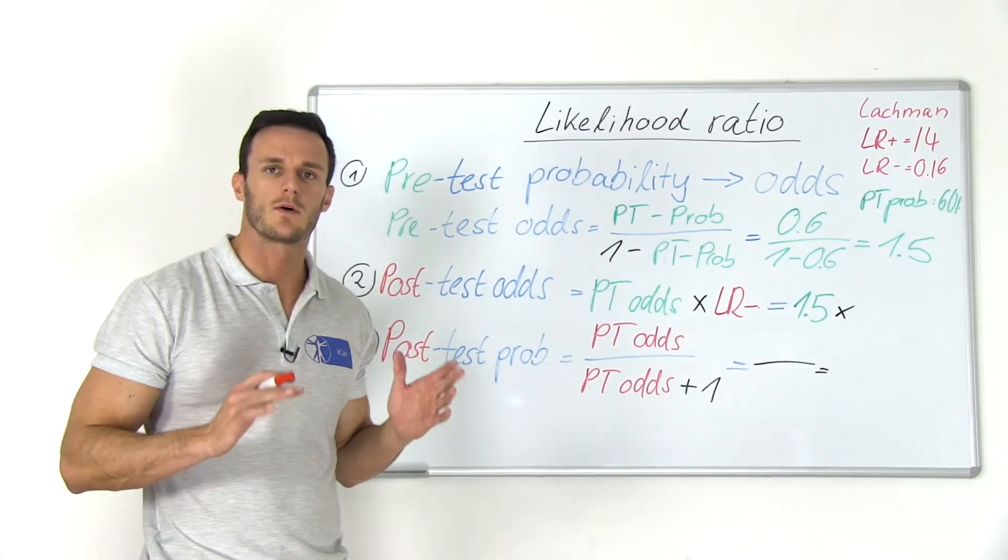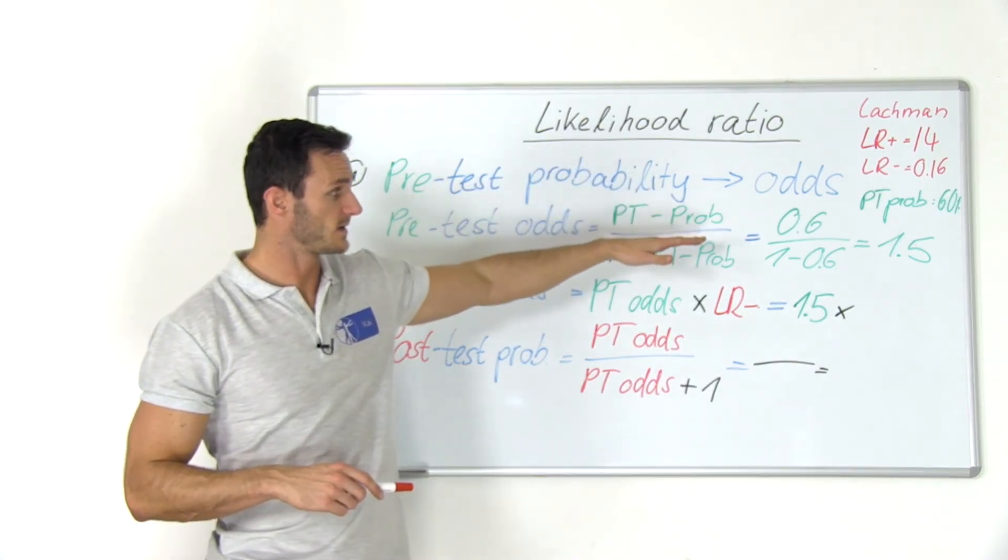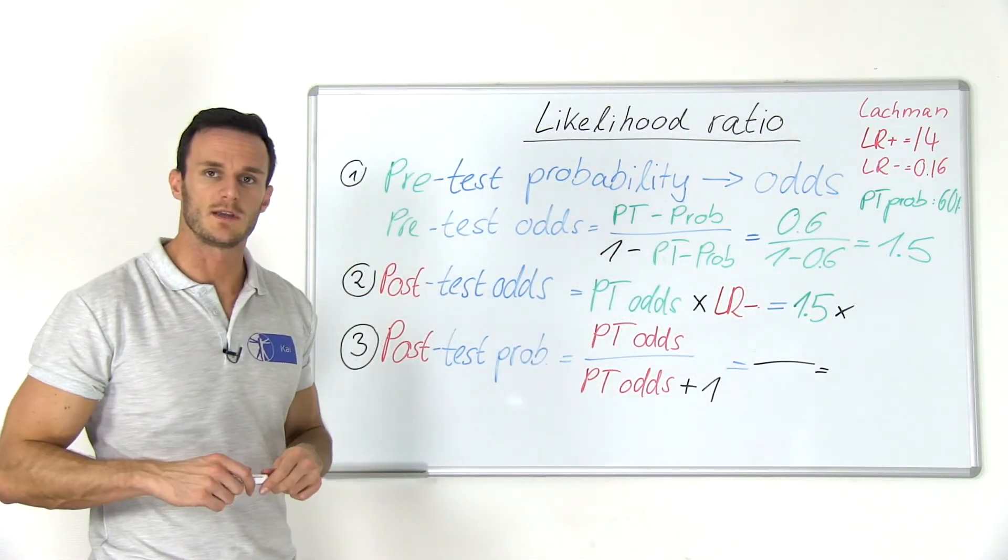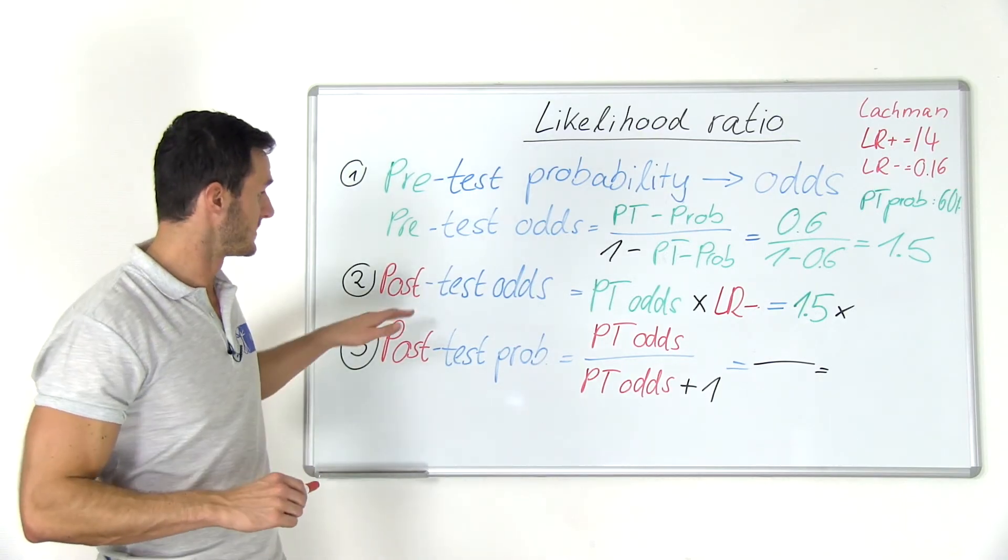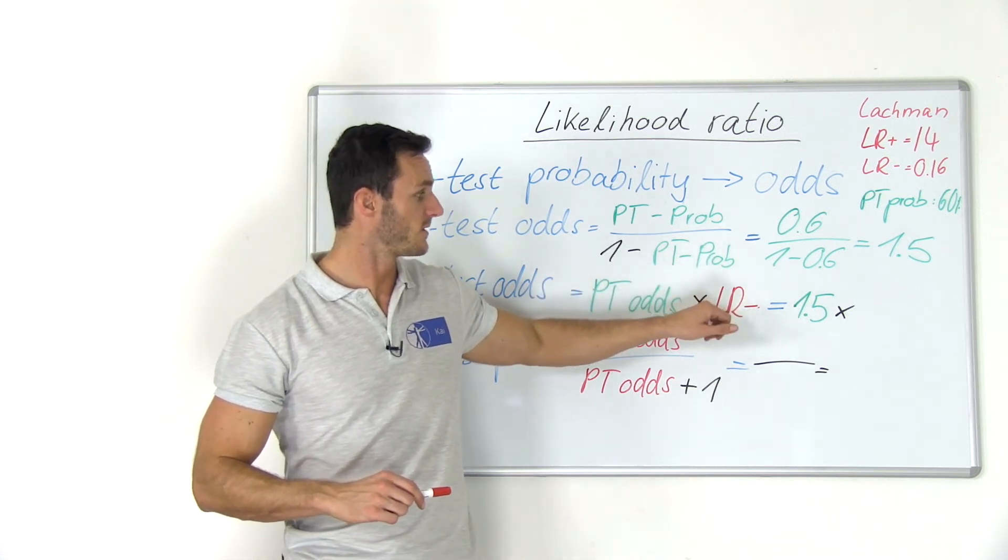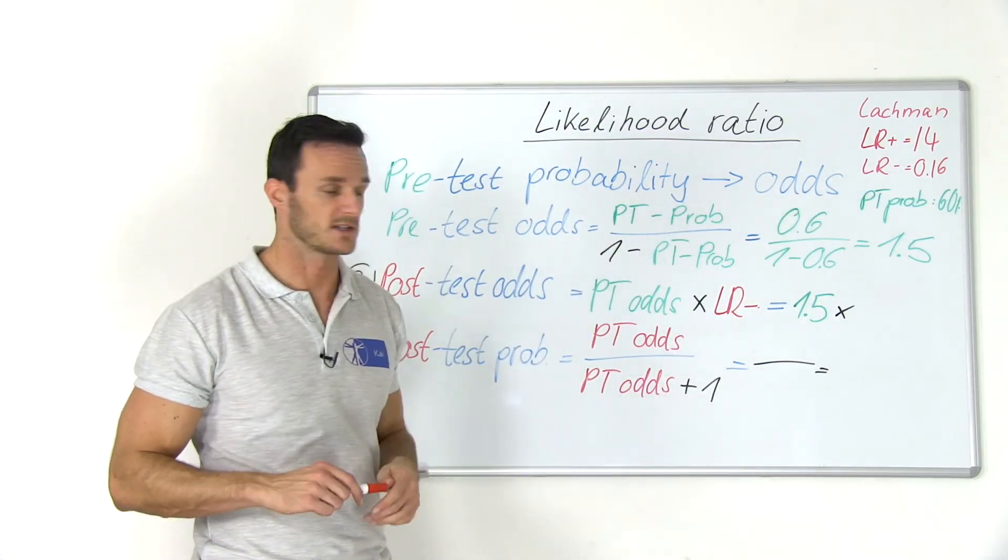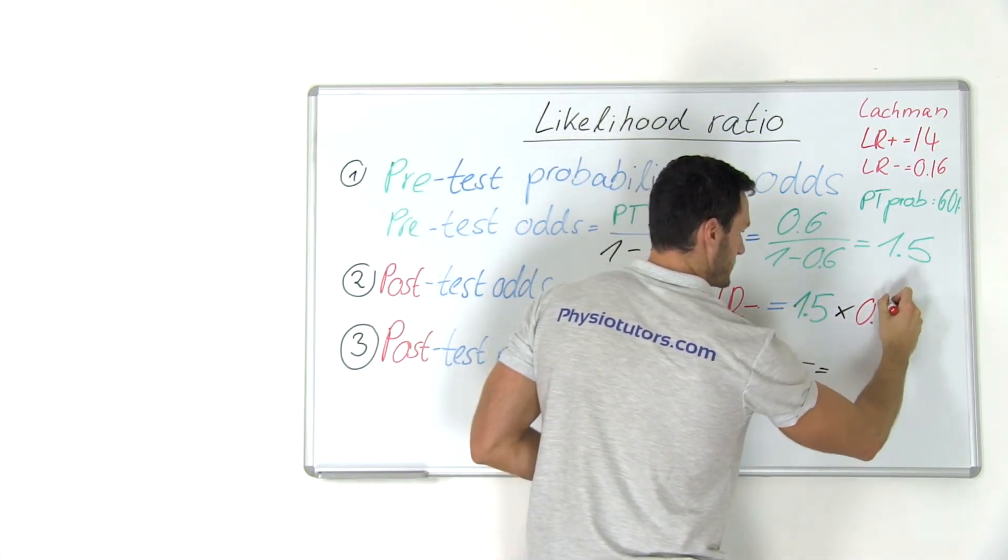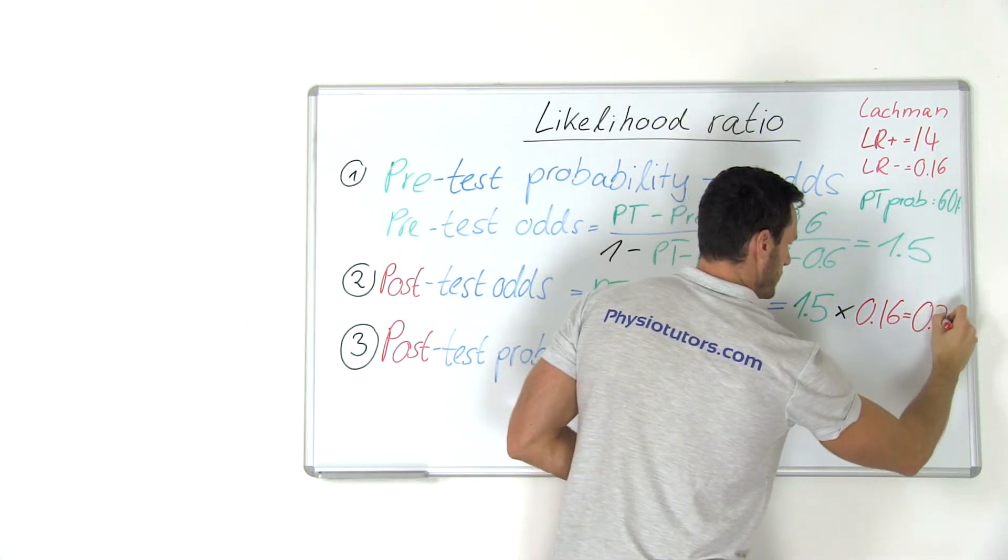Now, let's go through the whole calculation in case of a negative test. So we've already done the first step. So we have a pre-test odd ratio of 1.5, and now we want to see what the post-test odds are first for a negative test. So in this case, we multiply the pre-test odds of 1.5 with a negative likelihood ratio of 0.16 for the Lachmann test. So then we will end at 1.5 multiplied by 0.16, and we get 0.24.